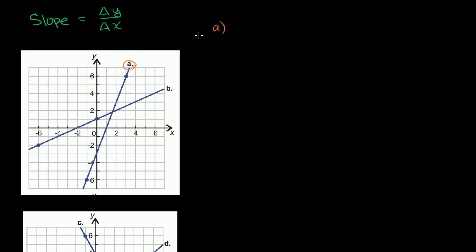Let's figure out its slope. They've actually drawn two points here that we can use as reference points. Let's look at the coordinates of those points. You have this point right here — its x-coordinate is 3, and its y-coordinate is 6. And then down here, this point's x-coordinate is negative 1, and its y-coordinate is negative 6.